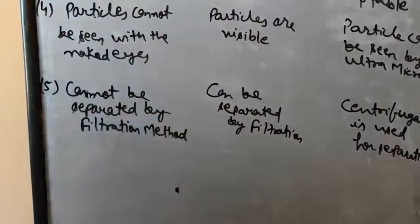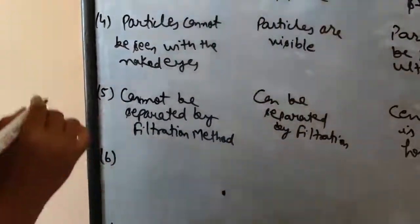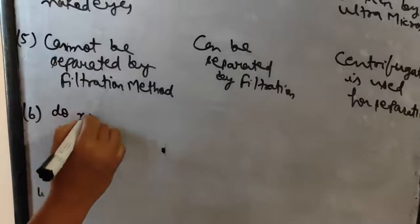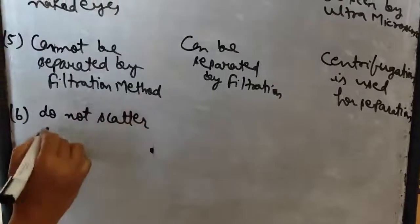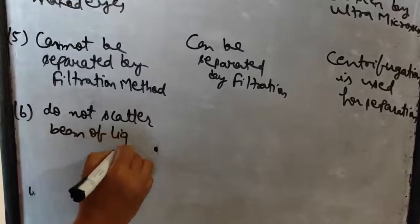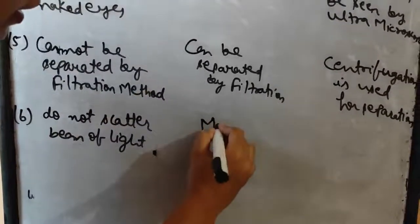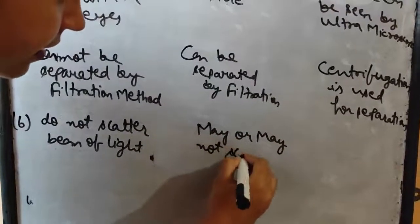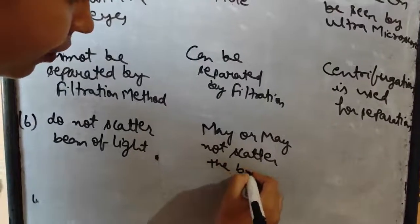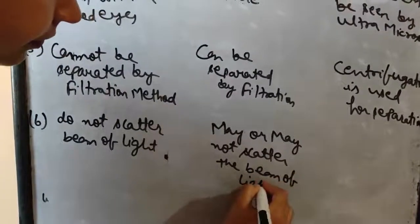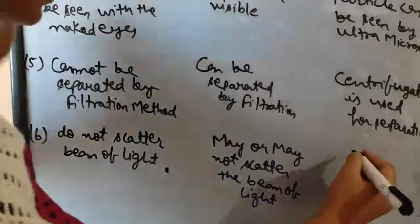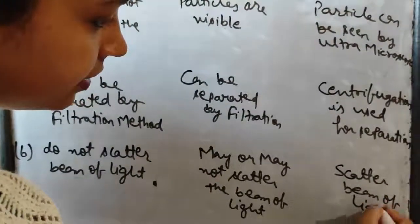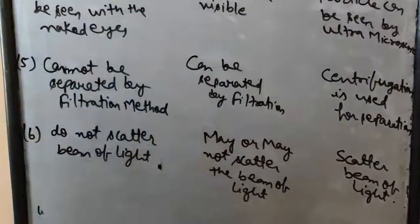These are the main points. One more you can write about the Tyndall effect. Since the particle size is very small in true solution, they do not scatter beam of light. Suspension may or may not scatter the beam of light. Colloids scatter beam of light—that is, they show the Tyndall effect. So these are the major points on the basis of which we can do the comparative study of these types of solutions.